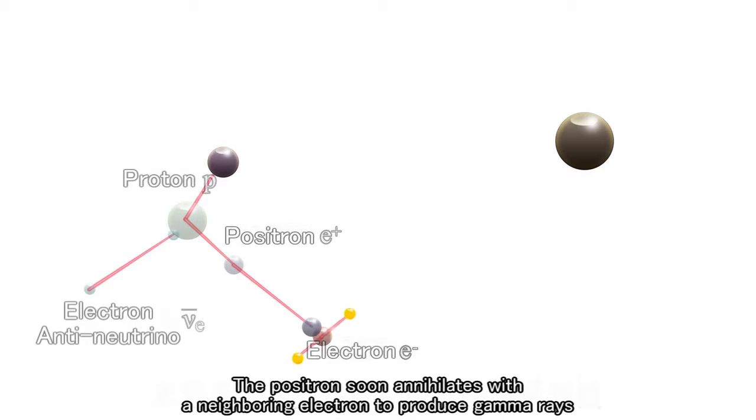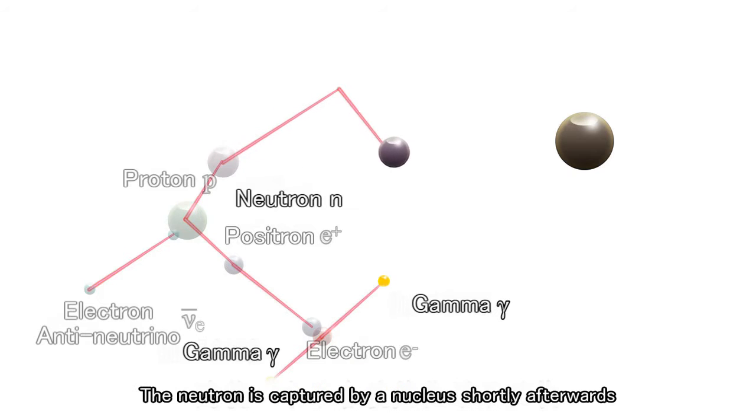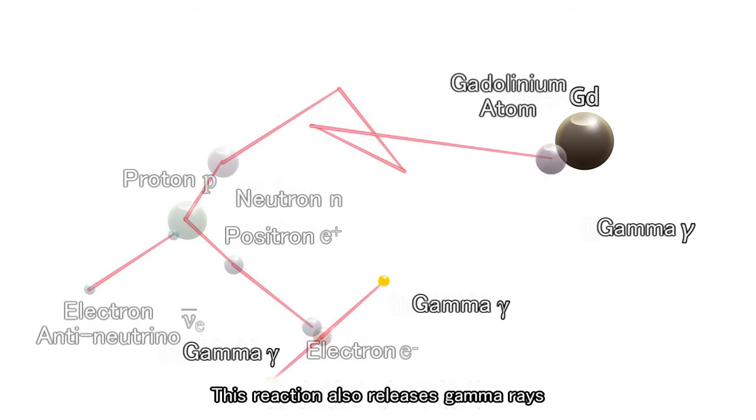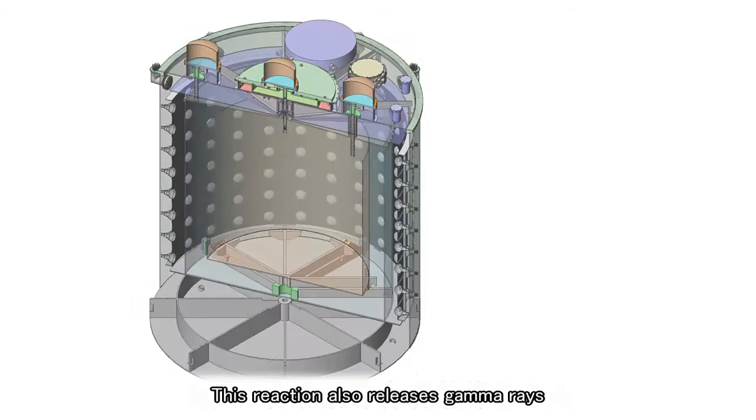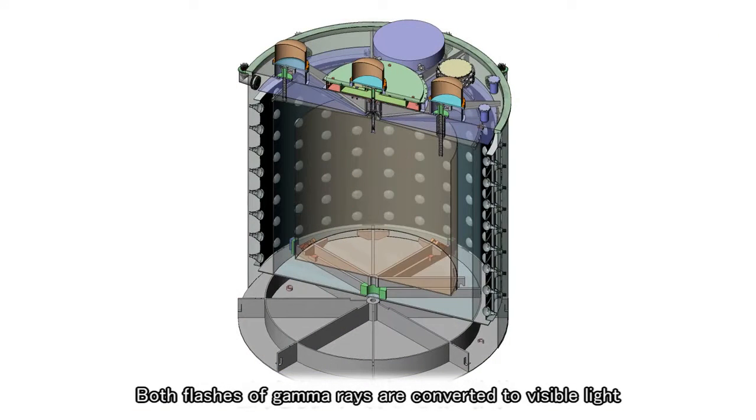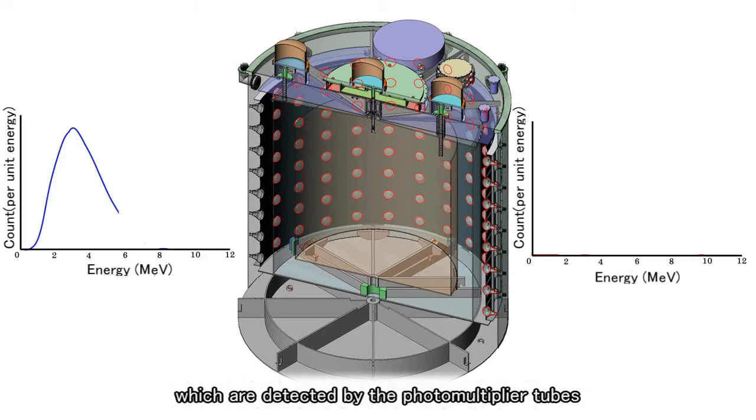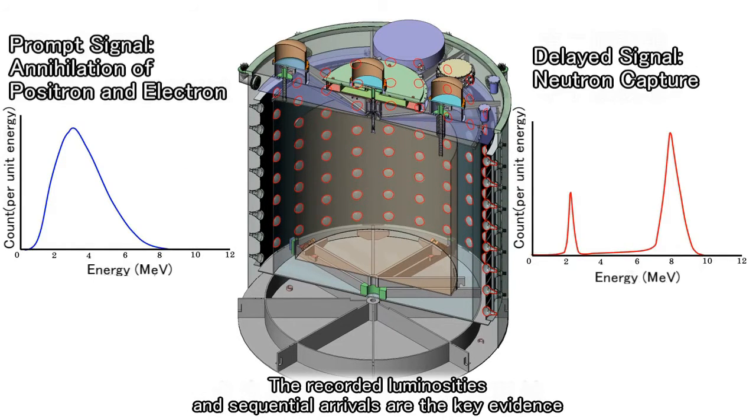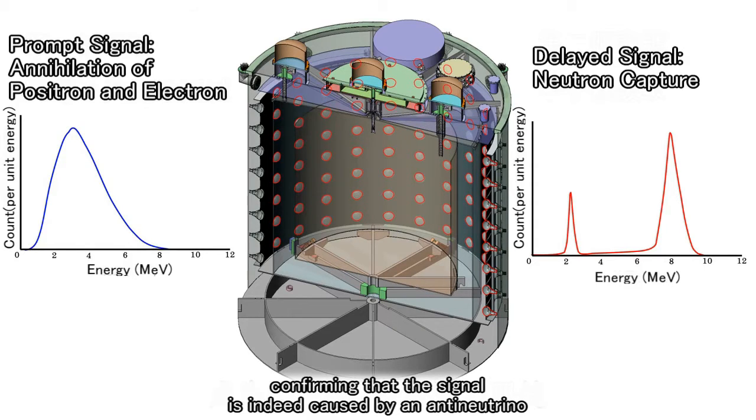The positron soon annihilates with a neighboring electron to produce gamma rays. The neutron is captured by a nucleus shortly afterwards. This reaction also releases gamma rays. Both flashes of gamma rays are converted to visible lights which are detected by the photomultiplier tubes.